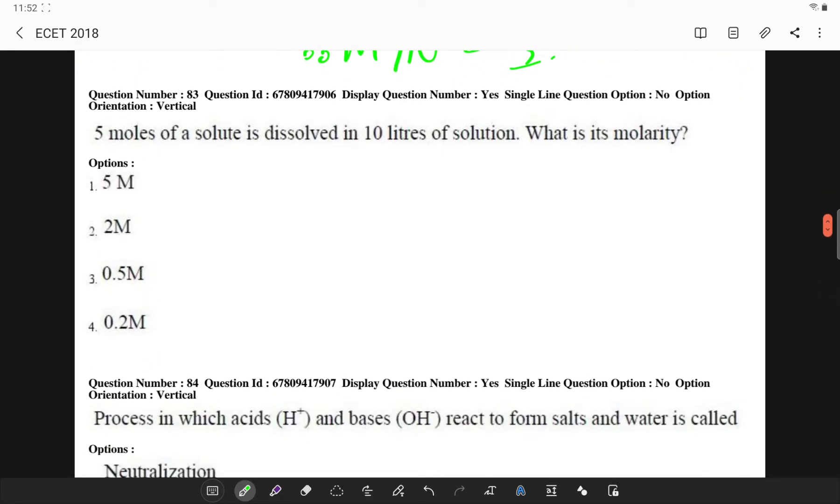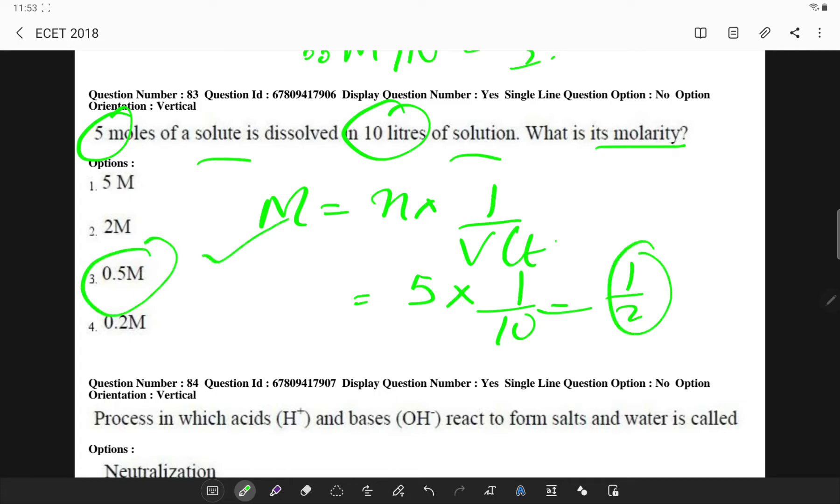Here 5 moles of solute is dissolved in 10 liters of solution, what is the molarity? Molarity is nothing but n times 1 by volume in liters. So here n is 5 and number of liters are 10, so I'll be getting molarity which is 1/2 or 0.5.